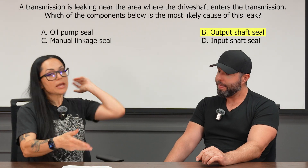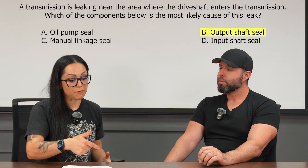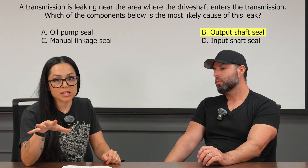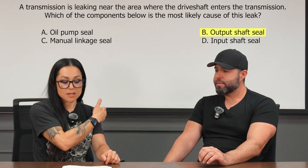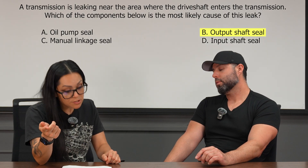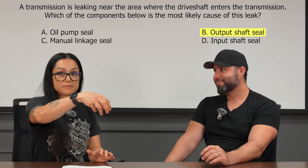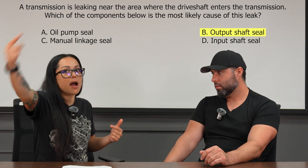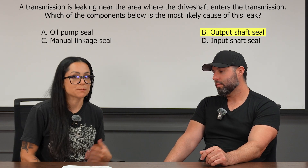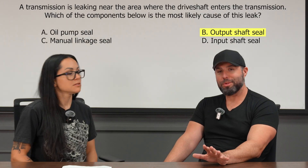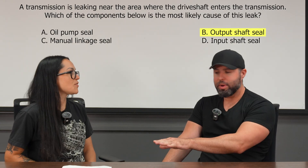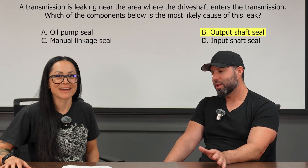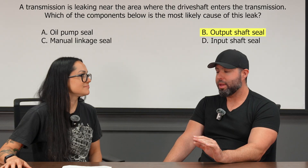Best answer here — this is a gimme. Looking at them: oil pump is at the front, so that eliminates A. Output shaft seal is our best bet because that's where the drive shaft's coming out. Manual linkage seal is going to be where your shifting area is — not where the drive shaft is. And input shaft seal is on the opposite end of the transmission. So output shaft seal, best answer — we're going with B.